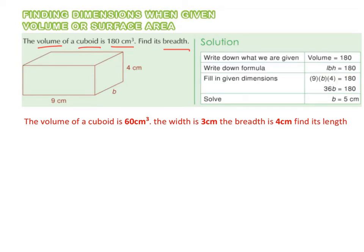9 multiplied by 4 is 36, and we just stick on the B. So we get 36B equals 180. Now we want to solve for B. 180 divided by 36 is going to be 5. So the breadth is 5 centimeters.